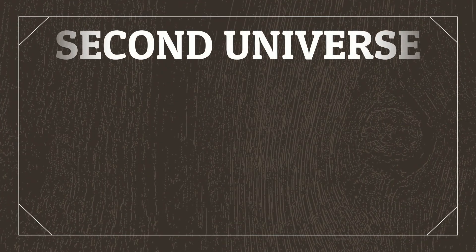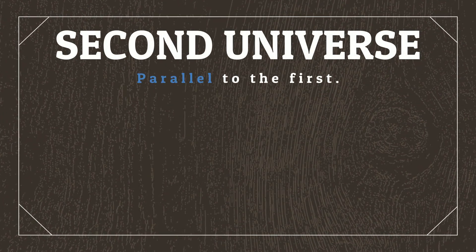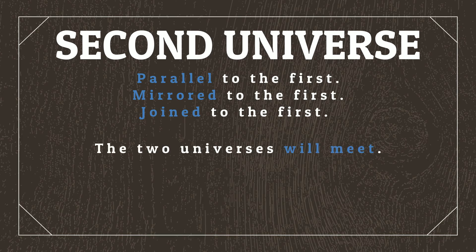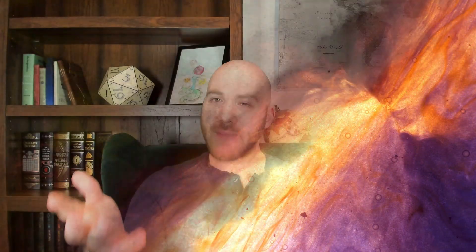Without diverging into a full-blown discussion of all the different types of real-world examples of cosmology, the takeaway point is that secondary universes usually have a function, a purpose for existence. For the universe we'll be worldbuilding together, let's create a second universe that's parallel to the first, and functions as a mirrored and conjoined universe.